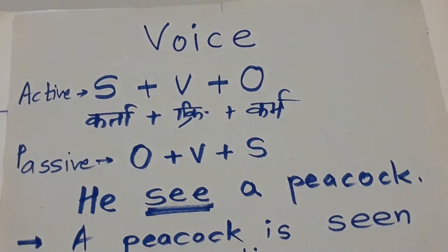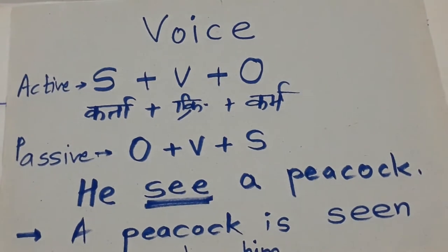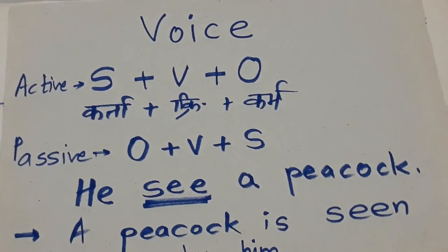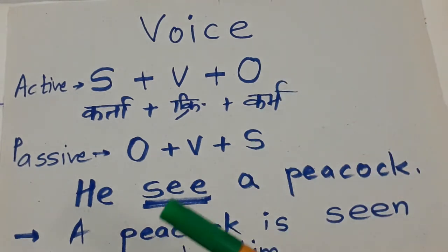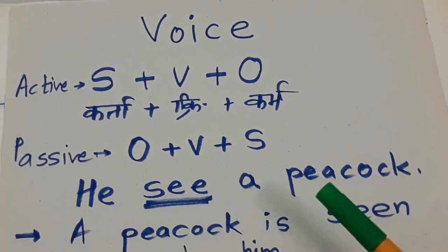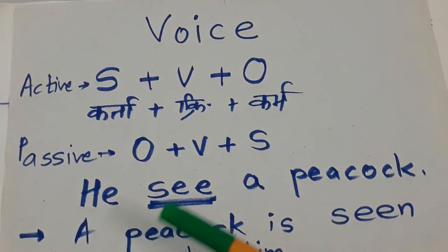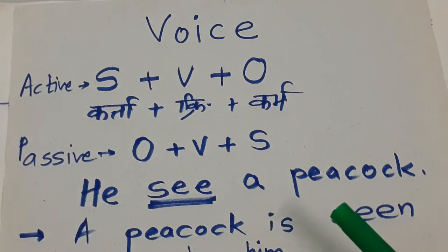Now let's see how active voice structure works and how passive works. For example, he see a peacock. Here he is subject, see is verb, peacock is object. So the structure is S plus V plus O. Now when converting to passive voice, see how changes happen in this.